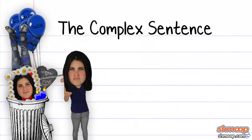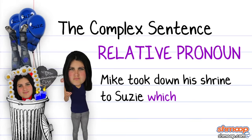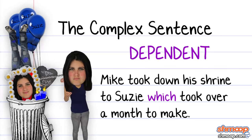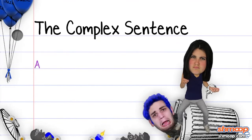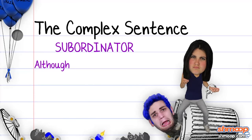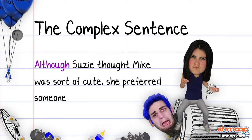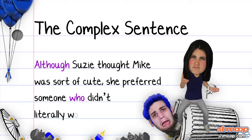For example: 'Mike took down his shrine to Susie, which took over a month to make.' And one with two dependent clauses: 'Although Susie thought Mike was sort of cute, she preferred someone who didn't literally worship her.'